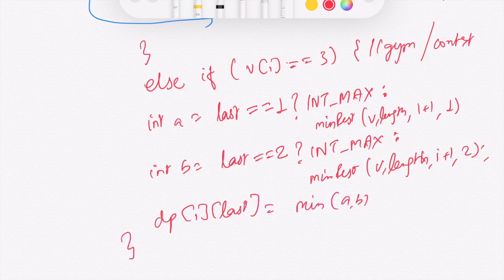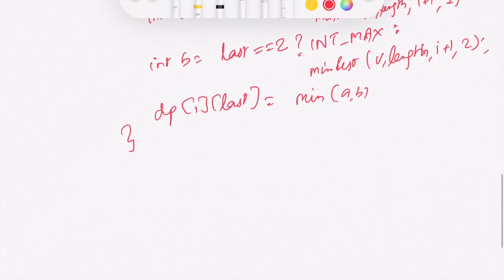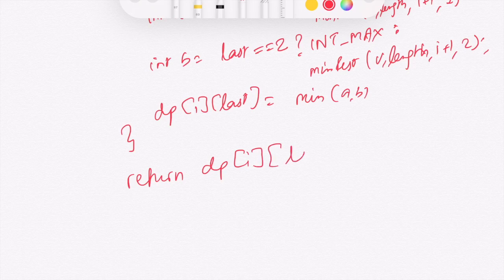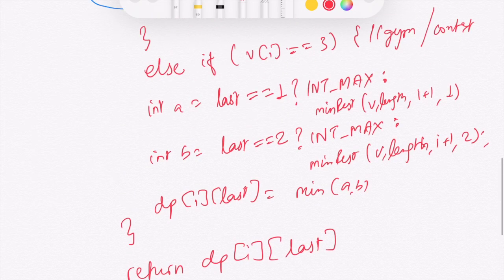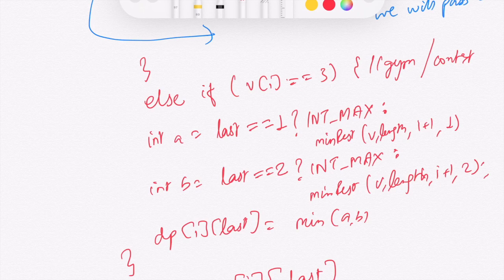Finally, the function returns dp[I][last]. I'll leave it for you to think about why I did not consider taking rest in the V[I] == 3 case — that's a good exercise to reflect on.